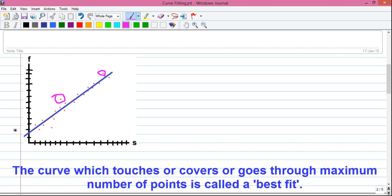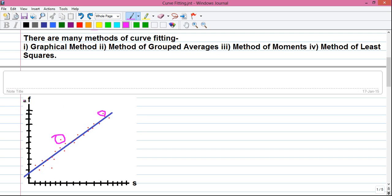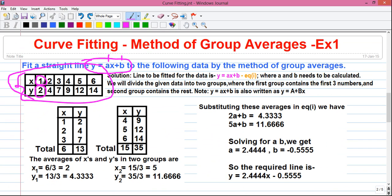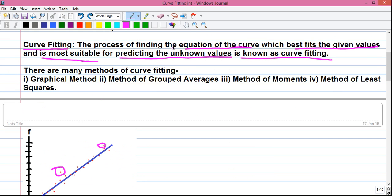So here in this example, we have drawn a straight line which is touching or covering most of the points. So in curve fitting, basically we will draw a curve or a straight line which will fit or touch most of the points. So what that line or curve will do? That line or curve represents our existing observed values and will help us predict the unknown values as given in the definition.